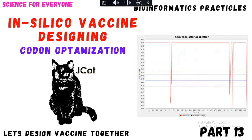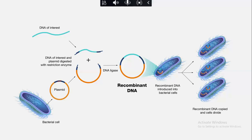First, let me give a brief introduction to codon optimization, starting with recombinant DNA technology. As we know, our vaccine has good binding affinity with MHC class one and class two receptors, so we need to produce it in the lab by expressing it using E. coli — similar to the production of insulin via recombinant DNA technology. We take the amino acid sequence, convert it to a nucleotide sequence, get a suitable plasmid vector, and use E. coli as the expression system.